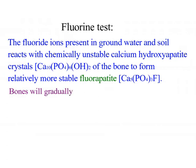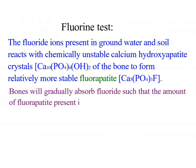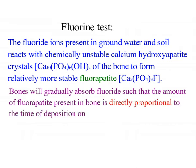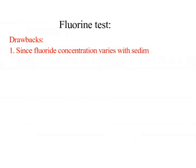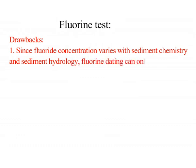The bones will gradually absorb fluoride such that the amount of fluorapatite present in the bone is directly proportional to the time of deposition of the bone. However, this technique has drawbacks: since the fluoride concentration varies with the sediment chemistry and sediment lithology, fluorine dating can only be used to date bones from the same location.